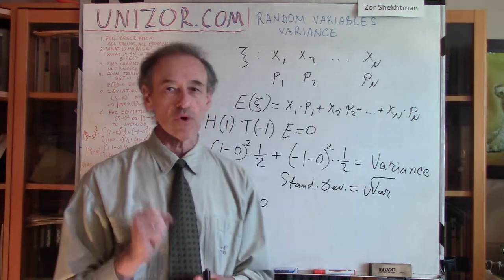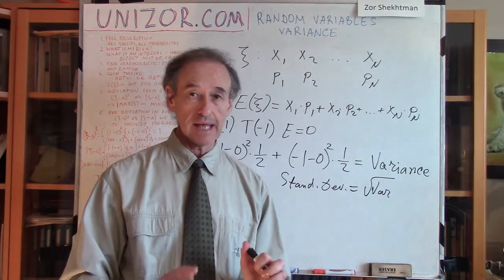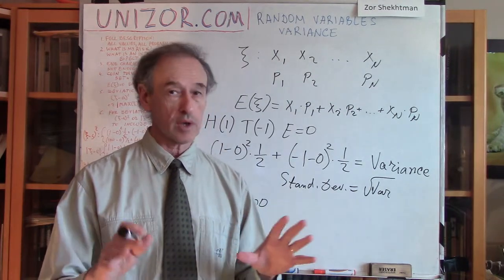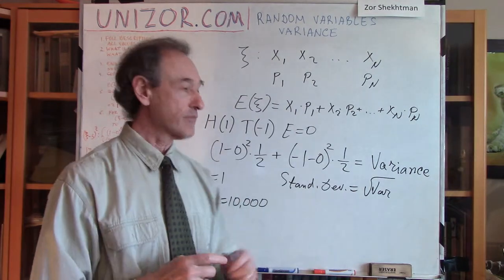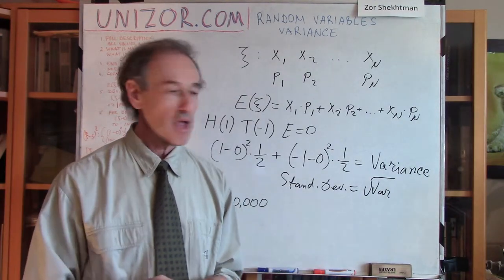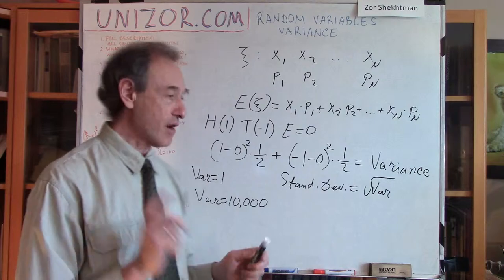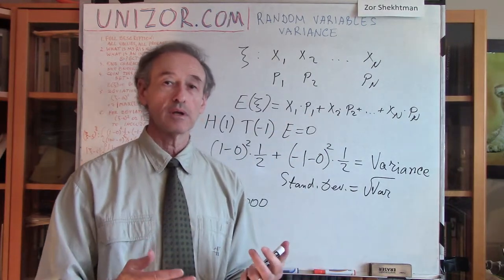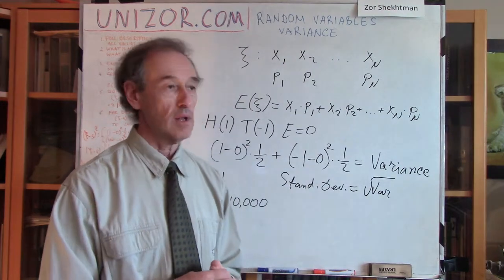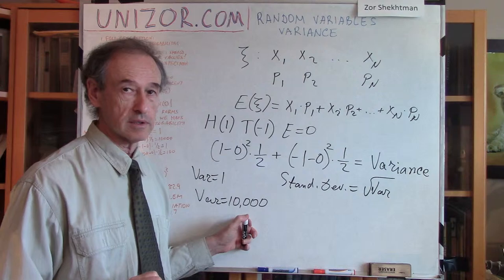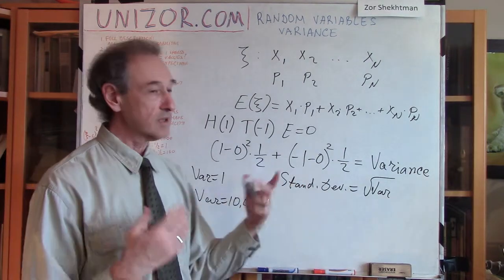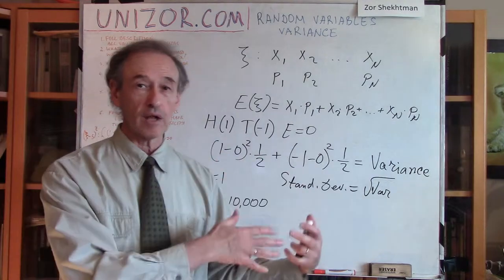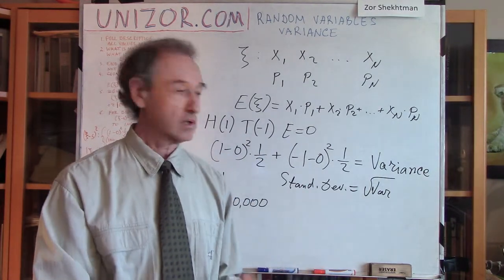Variance does have its own advantages. If you have two independent random variables — and we will talk about what independence means — then the variance of their sum equals the sum of their variances, which is not the case with standard deviation. So variance has a very important advantage: it's an additive function, like expectation. Remember, the expectation of the sum of two random variables equals the sum of their expectations. For variance, the same holds, but only for independent random variables. For standard deviation it's not the same, but since it directly depends on variance, we first calculate the variance of the sum and then take the square root.